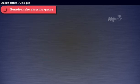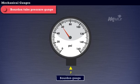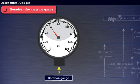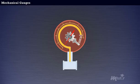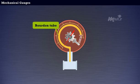Bordon tube pressure gauge is used to measure the pressure of both gas and liquid. In other terms, it is used to measure the gauge pressure with reference to the atmospheric pressure. It consists of an elastic metallic tube of elliptical cross-section and is bent in the form of circular arc. It is known as the Bordon tube.